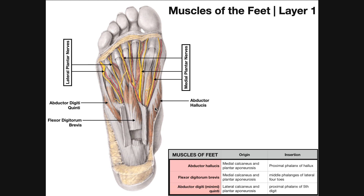Abductor hallucis is going to be on the hallux side or great toe side of the foot. If you follow its tendon to the hallux, it's going to insert on the medial side of the great toe. It originates on the medial calcaneus and partly on the plantar aponeurosis, and it inserts on the proximal phalanx of the hallux. This muscle abducts the great toe — pulling it away from the midline. Unless you specifically train this movement, it's probably a movement you won't be able to do easily.